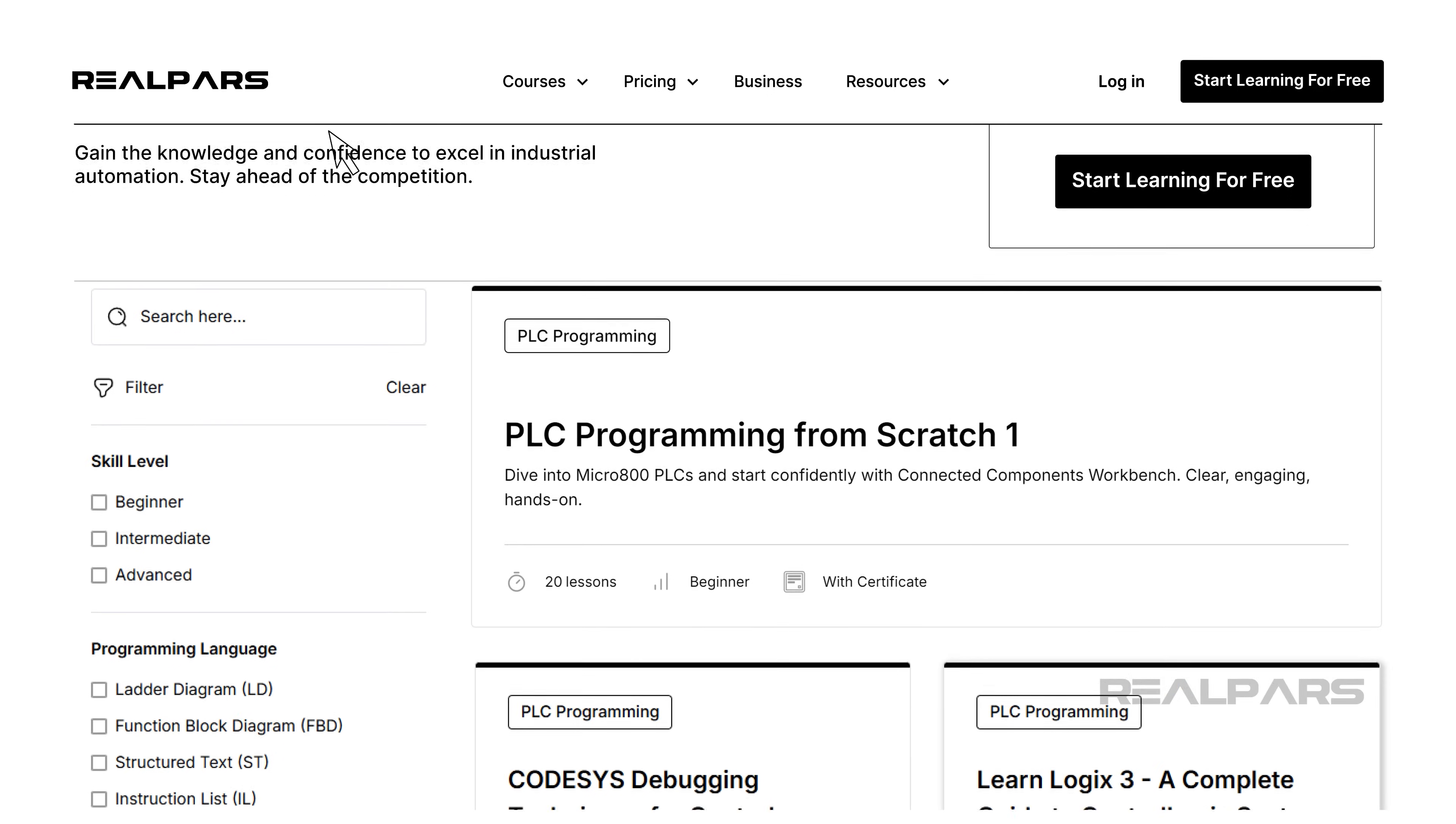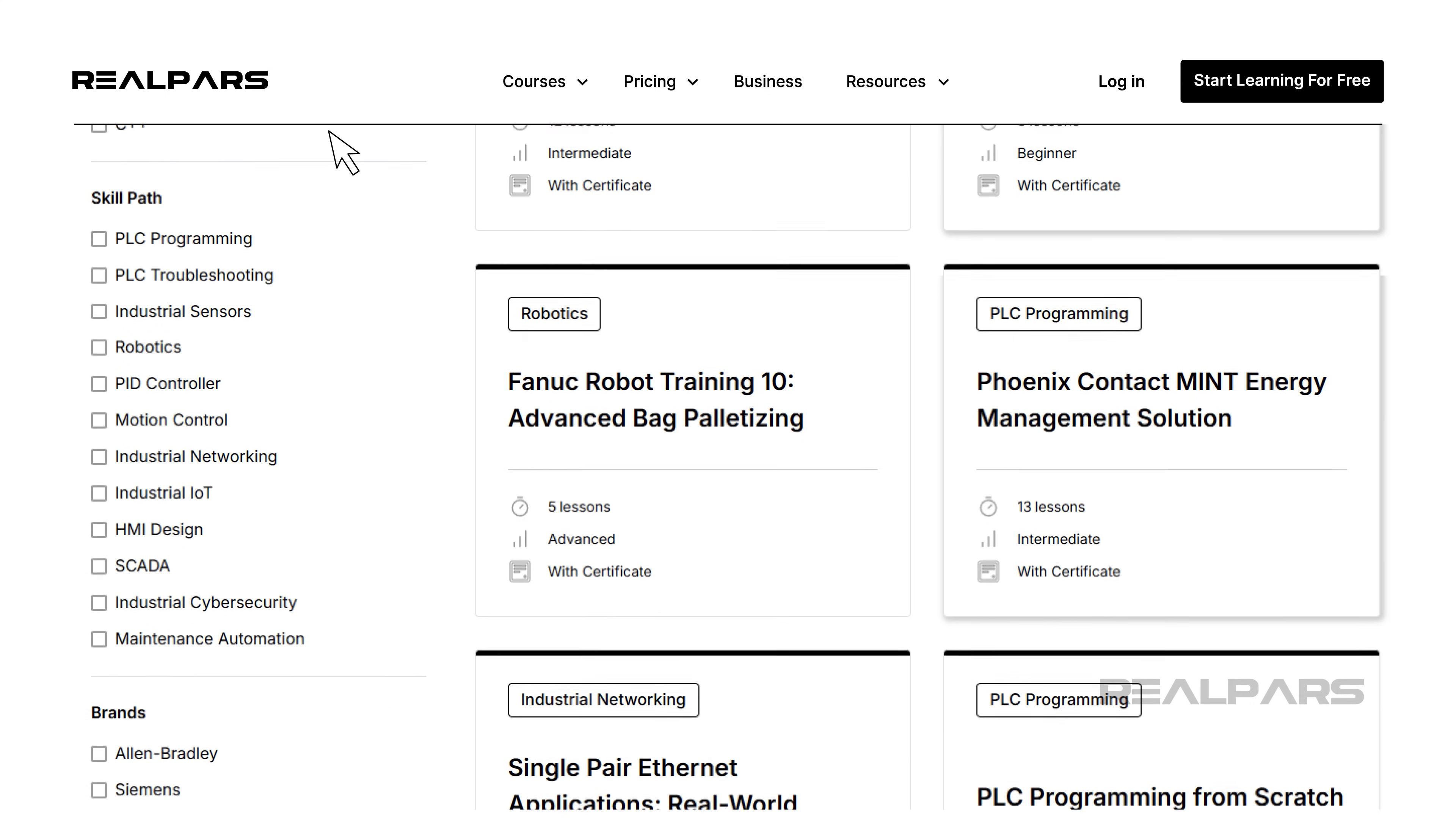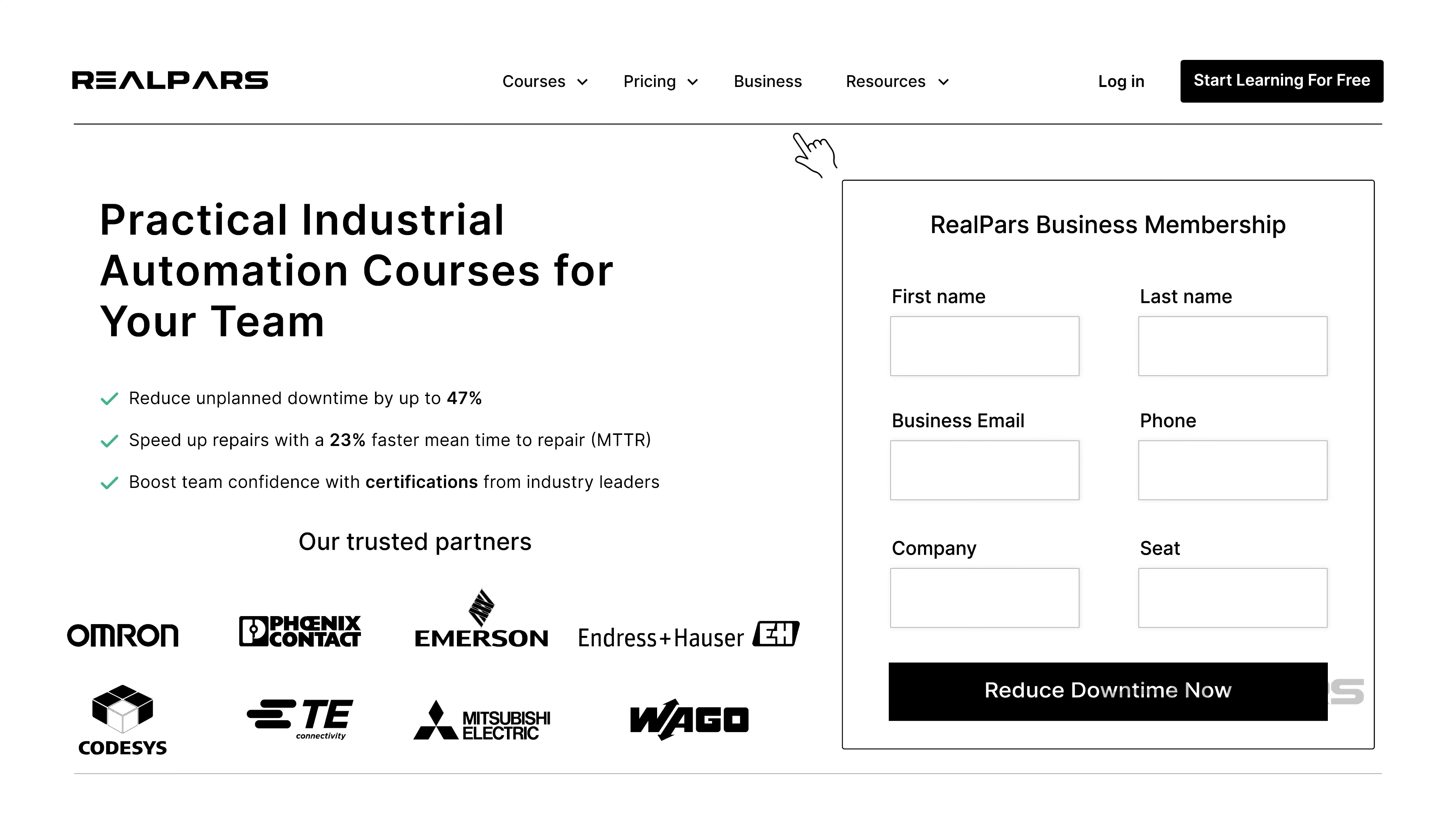Want to train your technicians and engineers in industrial automation? We offer several specialized courses perfect for your team's development. Visit realpars.com/business, fill out the form, and our team will quickly contact you to enhance your team's skills.